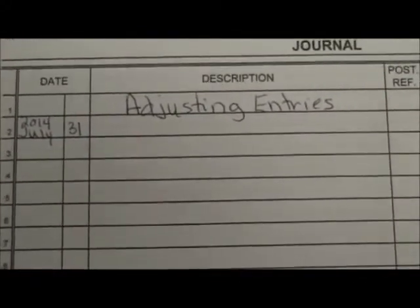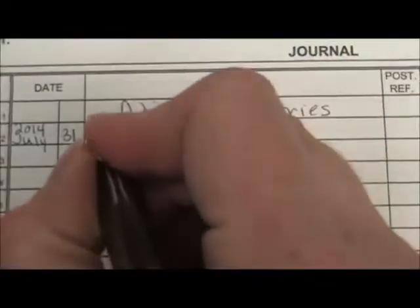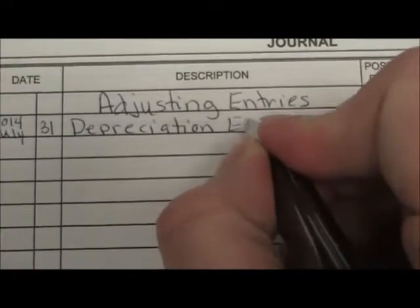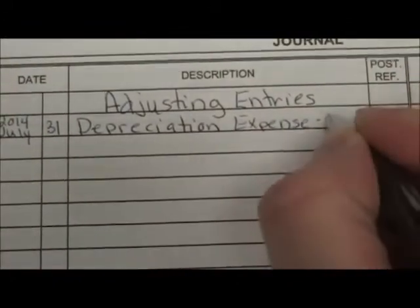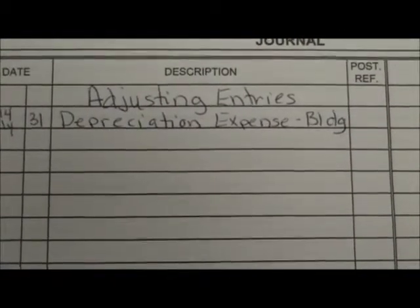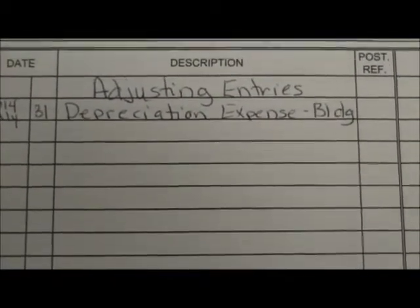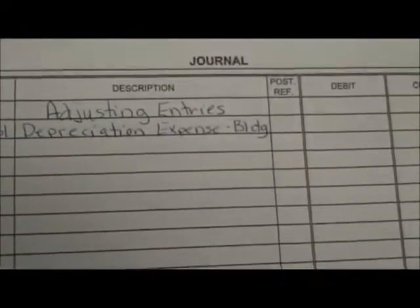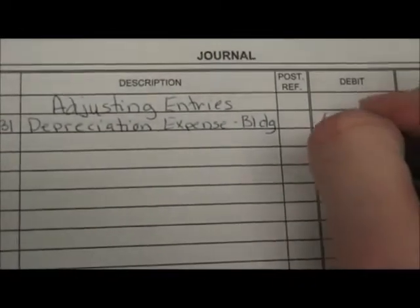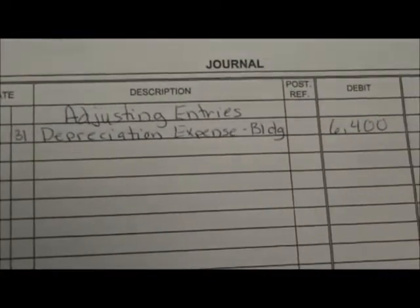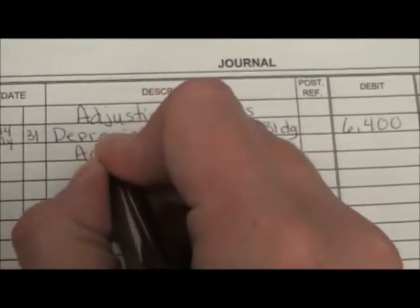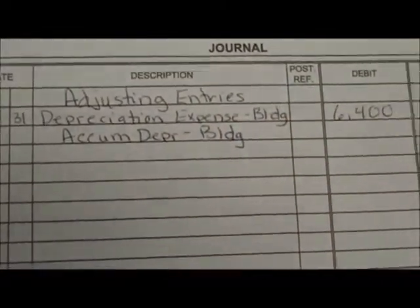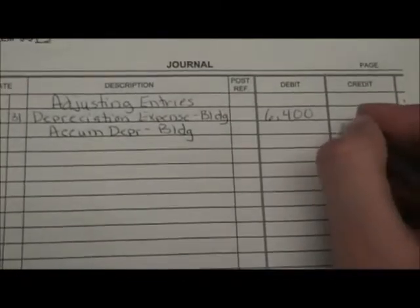We're talking about depreciation of the building, so the first thing we're going to do is debit our expense: Depreciation Expense Building. Depreciation is abbreviated DEPR, Expense is EXP, and Building is BLDG. We're going to debit Depreciation Expense Building for $6,400. And we're going to credit Accumulated Depreciation Building for $6,400.